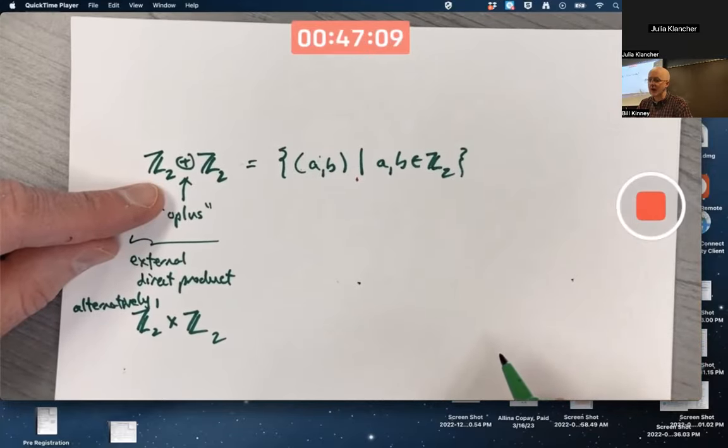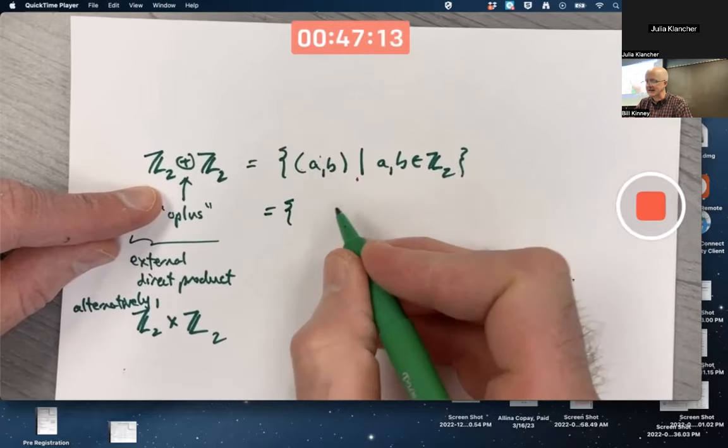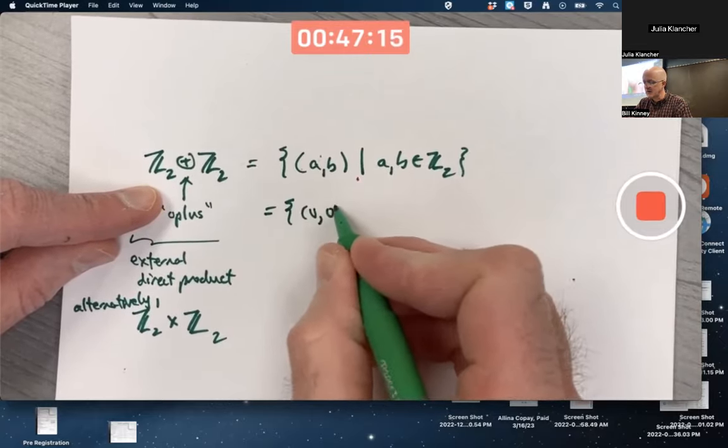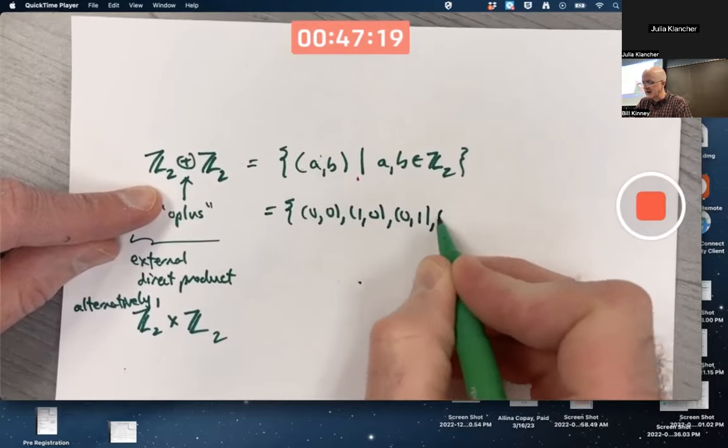Hey, there's only two elements in Z2, right? Zero and one. This is a very small set. It's (0,0), (1,0), (0,1), and (1,1).